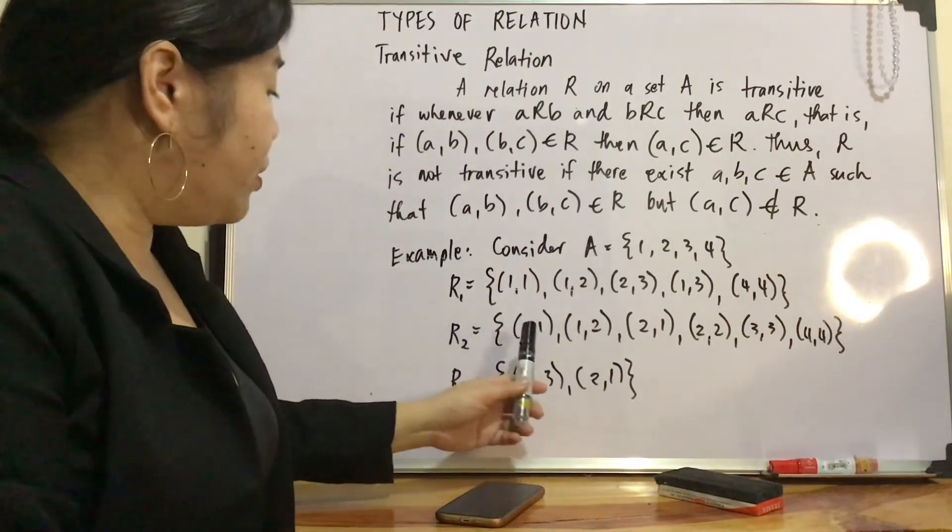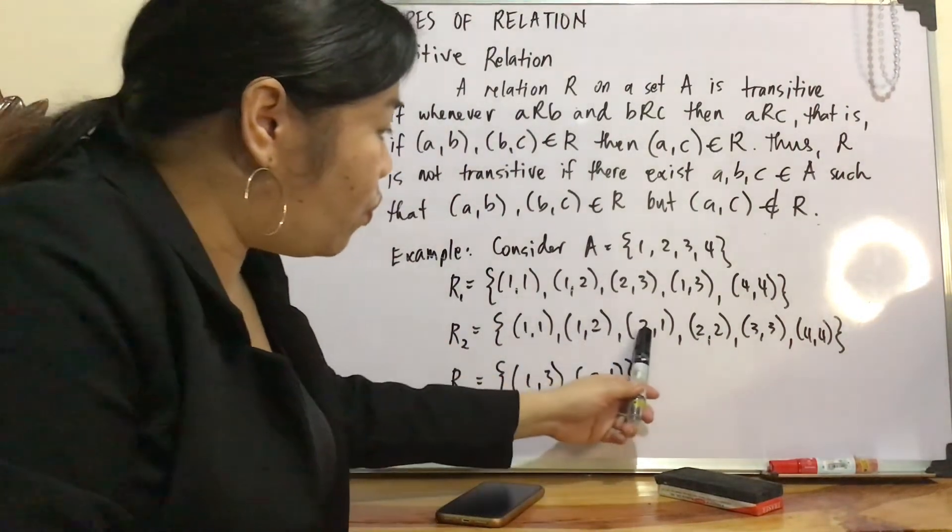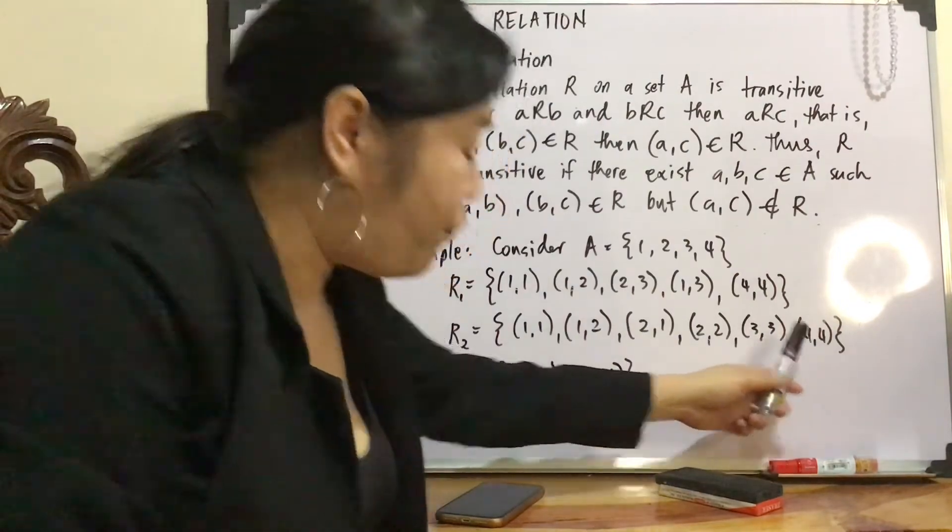Relation 2, R2, containing {(1,1), (1,2), (2,1), (2,2), (3,4), (4,4)}.